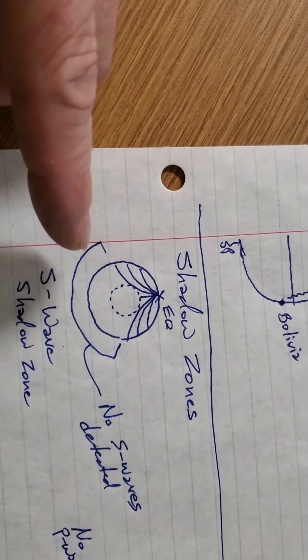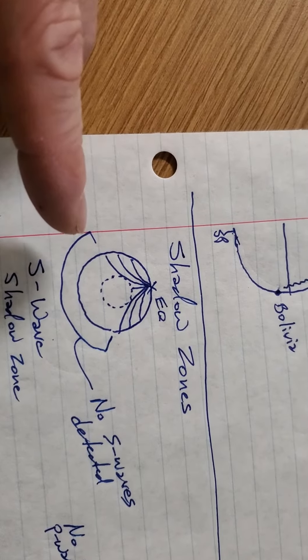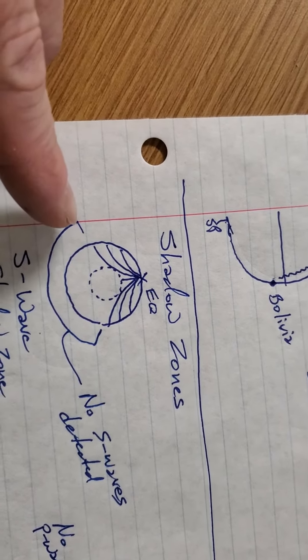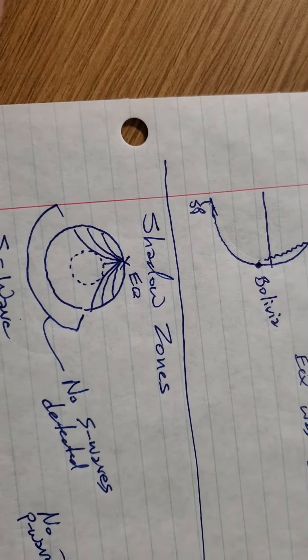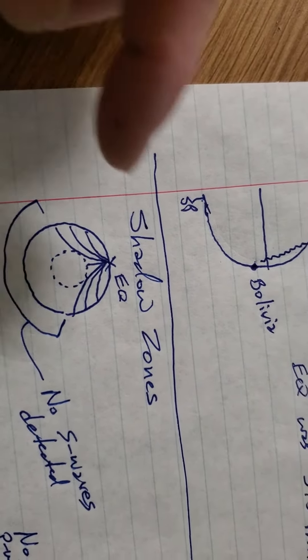So the S-waves cast a large, round shadow on the surface of the Earth. Nobody from there to there would be able to detect the S-waves from an earthquake that I have up here at the top.